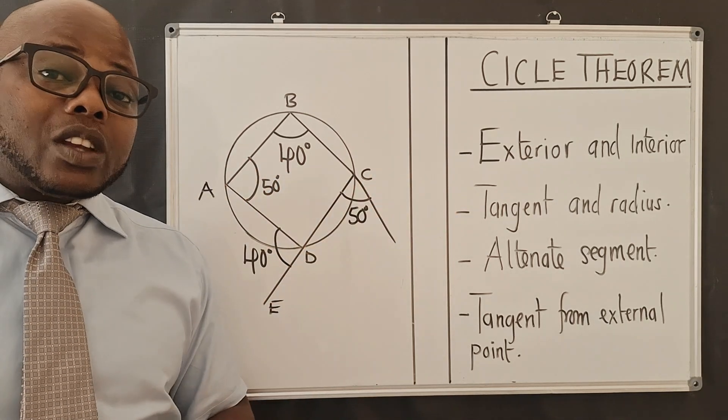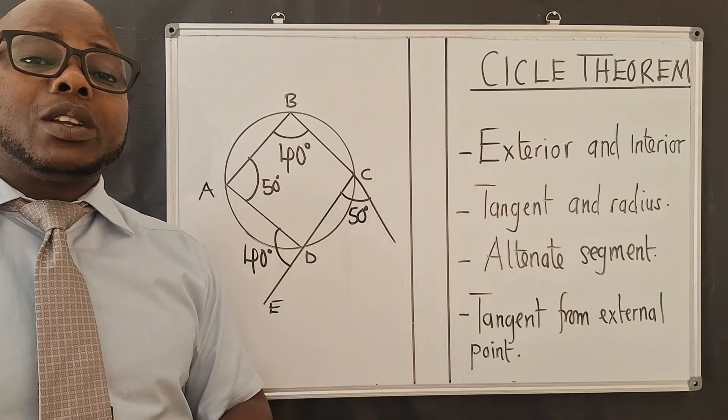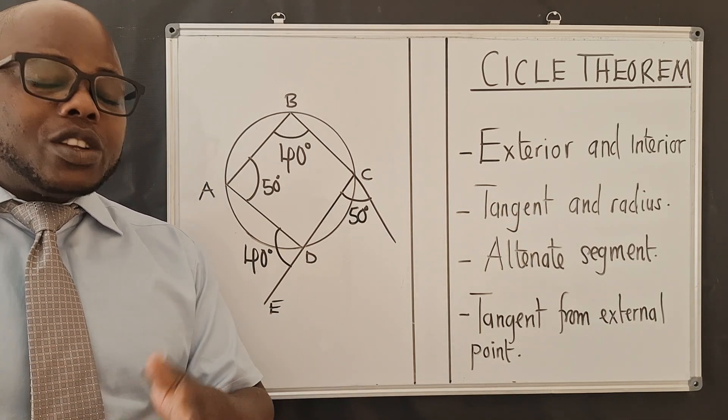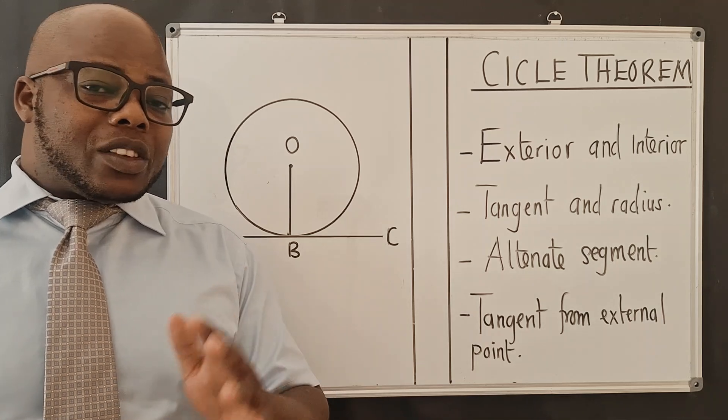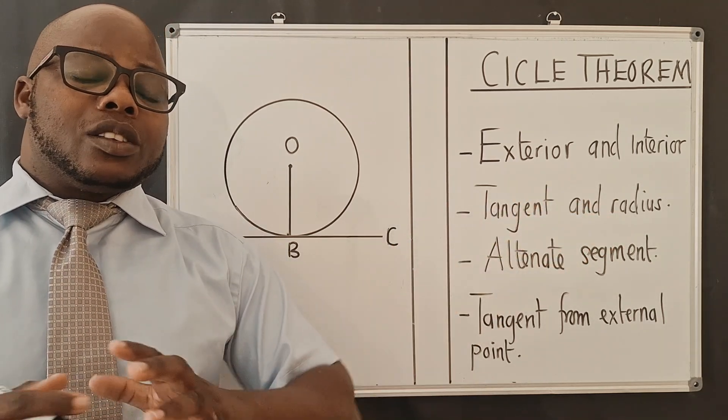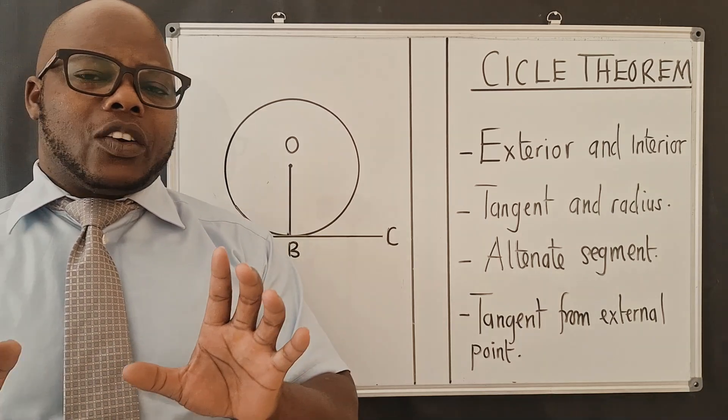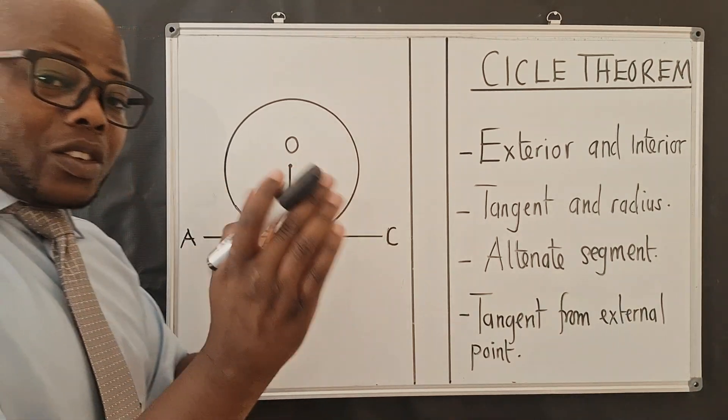Let's check out property number 7. We shall call this property number 7, which talks about the tangent and the radius. For property number 7, which is right over here, tangent and radius, they form 90 degrees. So let me show you what it says.